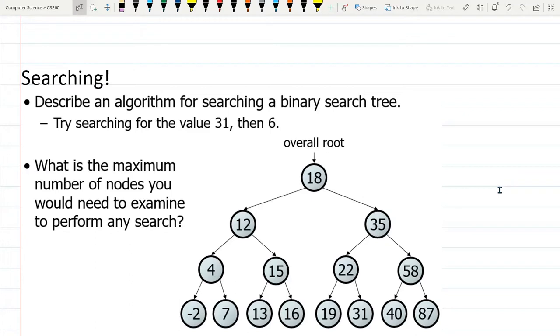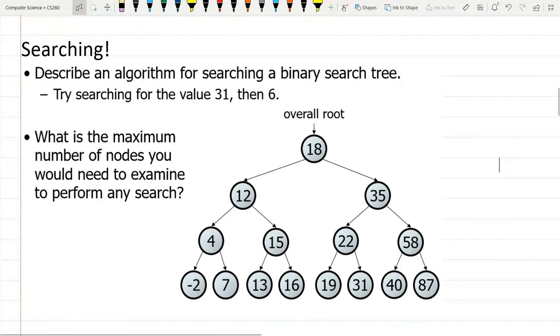So if your tree is in order, this tree should be a properly ordered binary search tree. Everything to the left of 18 is less than 18. Everything to the right is greater than 18.